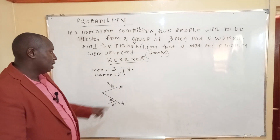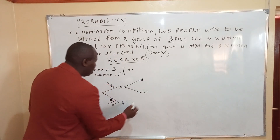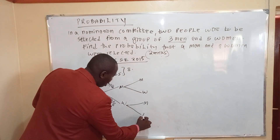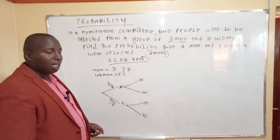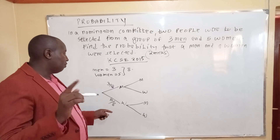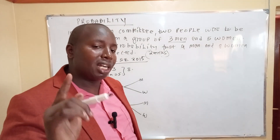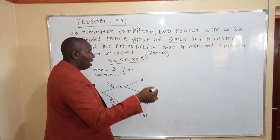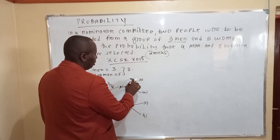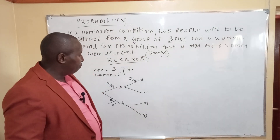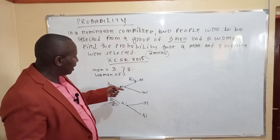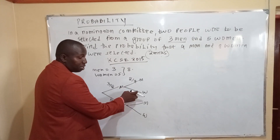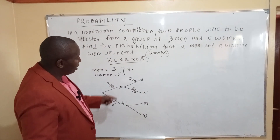For the second selection, if you selected a man first, you can put a branch for man or woman. The remaining men available are two out of seven people, because there were eight people and you selected one man. So the probability of the second person being a man is 2 out of 7. The probability of the second one being a woman is 5 out of 7.